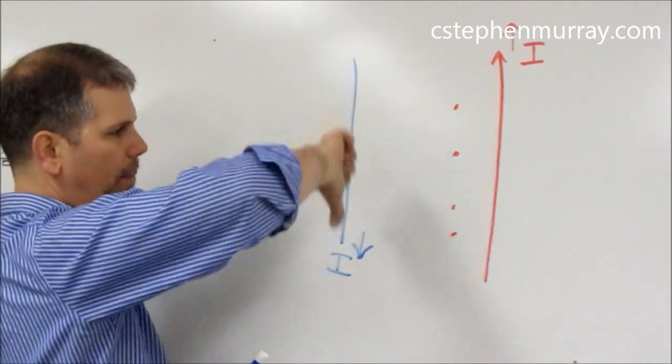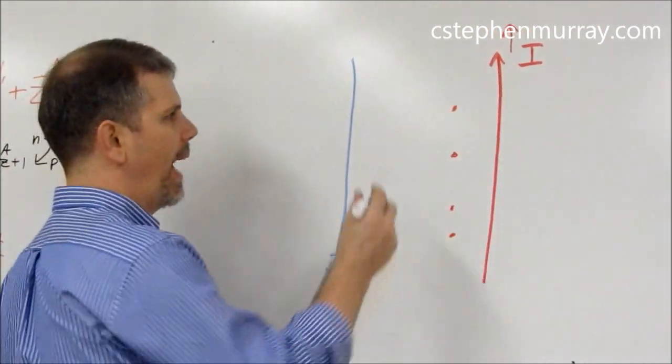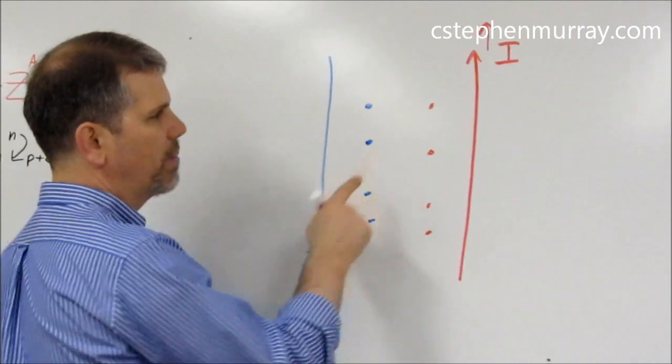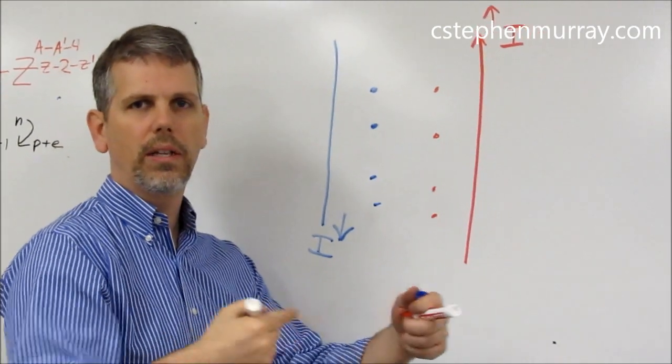For the blue one, thumb down, the current is also coming out of the page. And if both of these magnetic fields are pointing in the same direction, they repel one another.